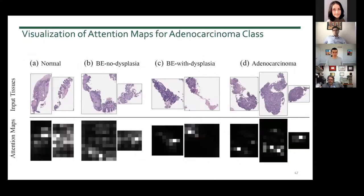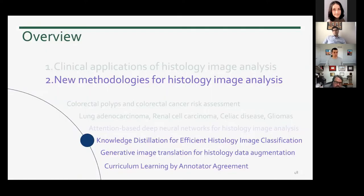We can also use the attention map for visualization of important features for whole slide classification, which pathologists can review to verify our results. Now I want to talk about using knowledge distillation and self-supervision for efficient histology image classification. This work is motivated by current challenges and bottlenecks in digital pathology: digitizing slides at high resolution requires major investment in time and resources, we are limited by hardware capacity for analyzing these slides, and region-of-interest annotation is slow, expensive, and requires high expertise.